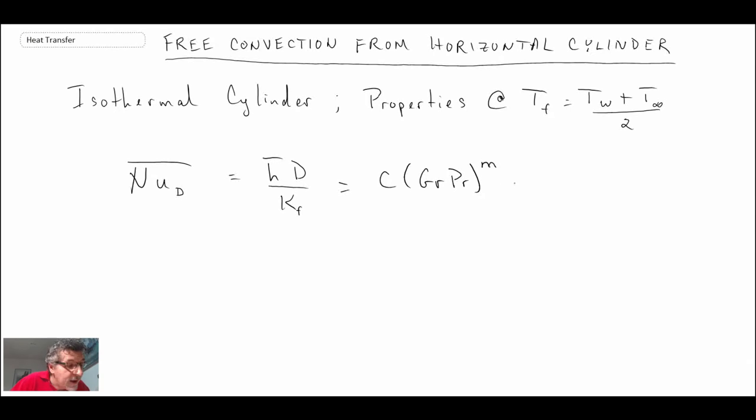and we could do Grashof-Prandtl to the N, I'll do M, doesn't matter. Or you could do C, Rayleigh number based on diameter to the M. And here C and M are from tables. I'm not going to go through what the values are. Any heat transfer book, you can probably find those values. So that is one correlation, similar to what we saw for the vertical plate. And we also do have a relationship that applies,